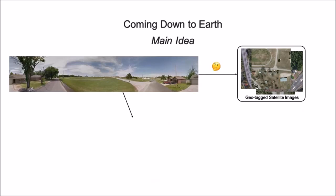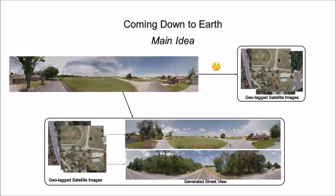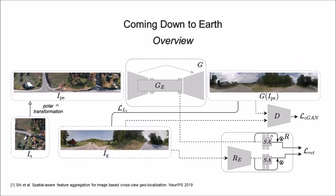Instead, we propose to address this discrepancy explicitly by learning to synthesize realistic street views from top-view satellite inputs. Following this observation, we introduce our multi-task architecture.